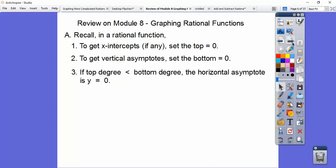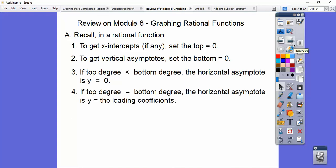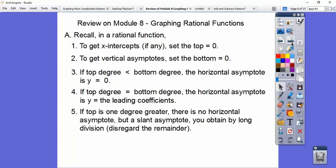If the top degree is less than the bottom degree, then you automatically have a horizontal asymptote at y equals zero. If the top equals the bottom, then you have a horizontal asymptote that's y equals whatever the leading coefficients are. So if the top is one degree greater, then you don't have a horizontal asymptote, you have a slant asymptote, and you get that by doing long division. And holes come from the cancellations of common factors, so I've got an example of that also.